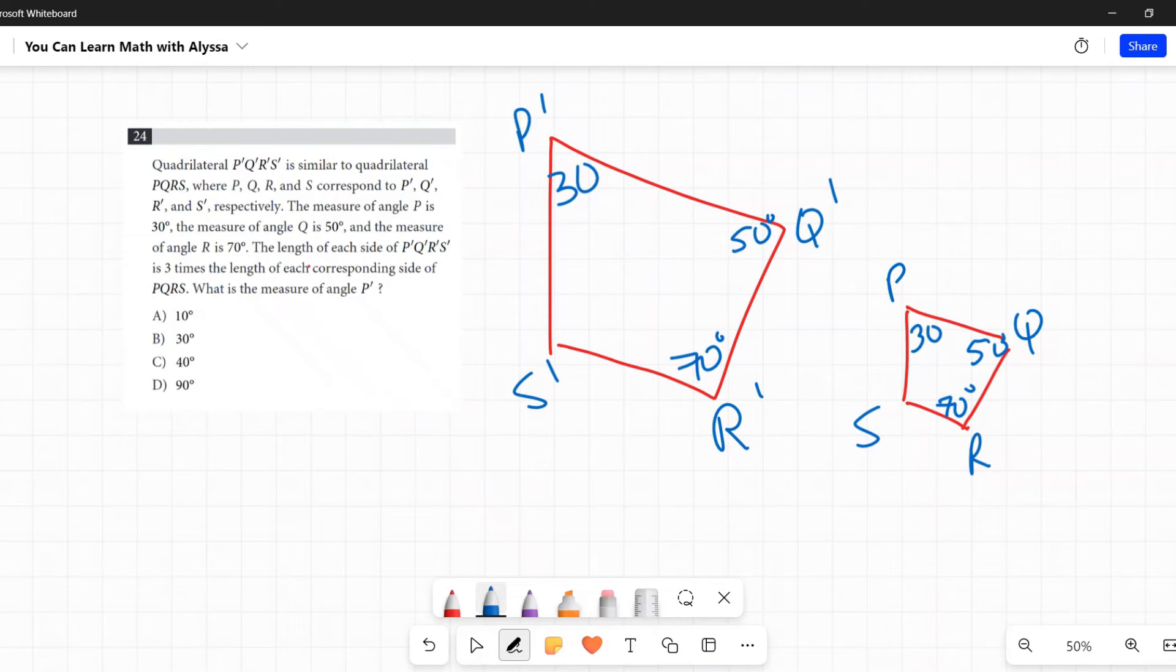The length of each side of the P prime Q prime etc. is three times the length of each corresponding side of PQRS. So I'm going to represent that on my picture by saying okay, well if this side were x, this side over here P prime to Q prime would be three times as big or 3x. Okay, so now I have a nice visual representation of all the information they've given me.